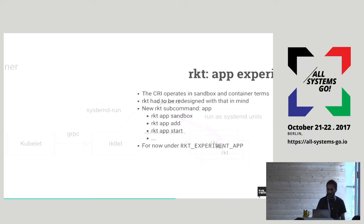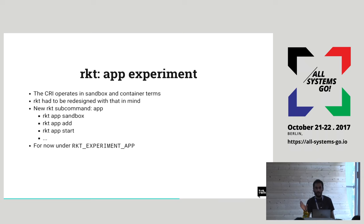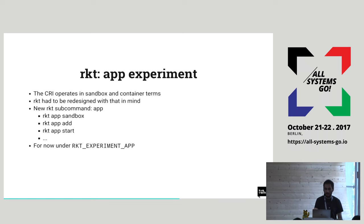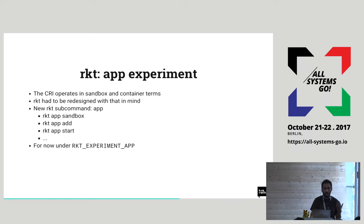To implement this we had to change Rocket's design a bit, because it had basically an immutable design — once you start a pod, it stays that way until you stop it and start a new one. These changes are what we call the 'app experiment.' The CRI operates in sandbox and container terms, not just pods. So we added a new 'app' subcommand that maps to each CRI interface method. This is currently under an environment variable called 'rocket_experiment_app', so you have to specify that to use these features.